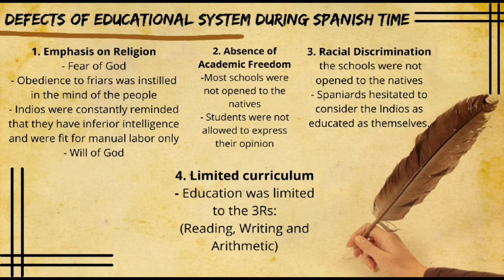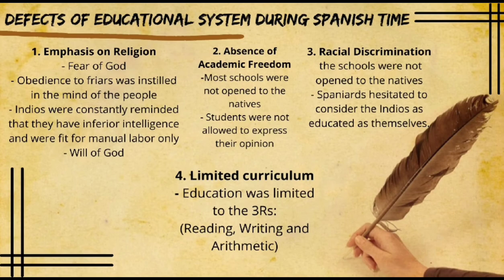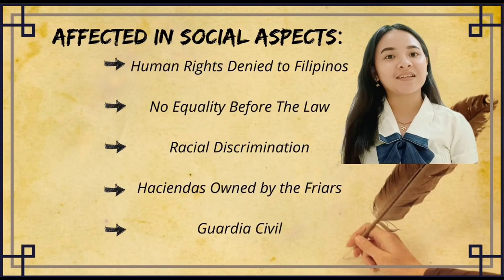However, there were defects in the educational system during Spanish time. First, emphasis on religion — fear of God was emphasized, obedience to friars was instilled, and Indians were constantly reminded that they had inferior intelligence and were fit for manual labor only. Second, absence of academic freedom — most schools were not open to the natives and students were not allowed to express their opinions. Third, racial discrimination — prior to the Educational Decree of 1863, schools were not open to the natives, as Spaniards hesitated to consider the Indians as educated as themselves. Lastly, limited curriculum — education was limited to the three R's: reading, writing, and arithmetic.